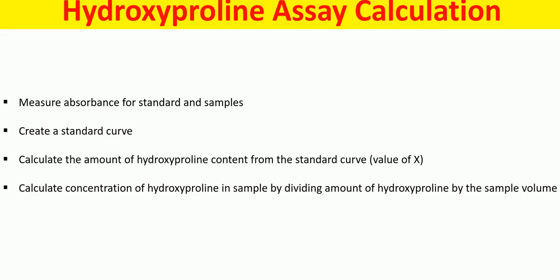Hello everyone. In this lecture today I'm going to talk to you about how to do the calculation for a hydroxyproline assay. First, measure the absorbance for standards as well as samples, then create a standard curve from the absorbance of the standards and calculate the amount of hydroxyproline content from the standard curve — that is the value of x — and finally calculate the concentration of hydroxyproline in the sample by dividing the amount of hydroxyproline by the sample volume.